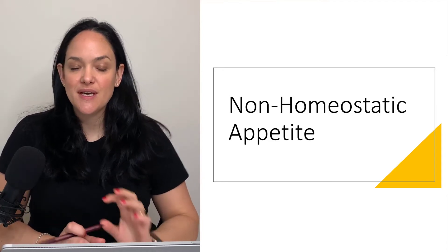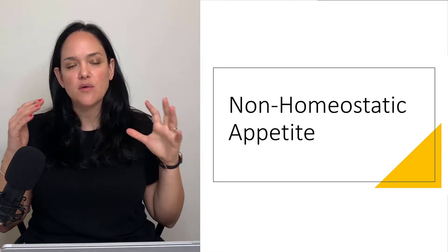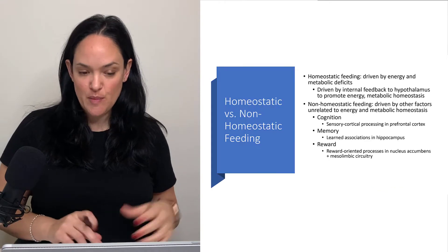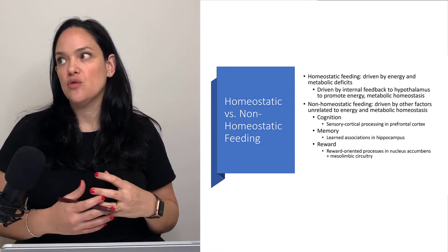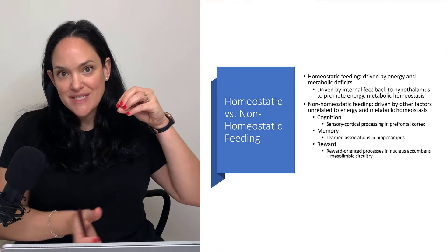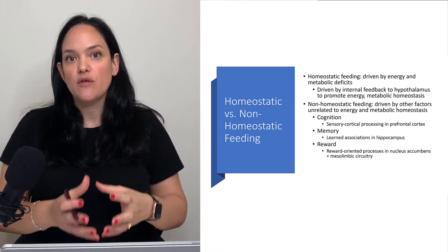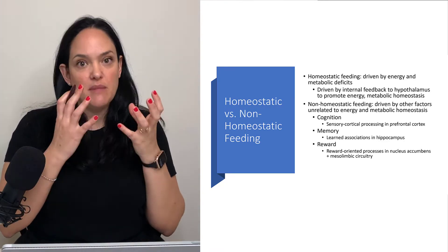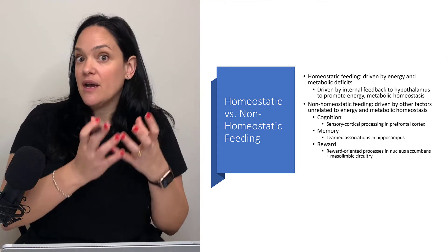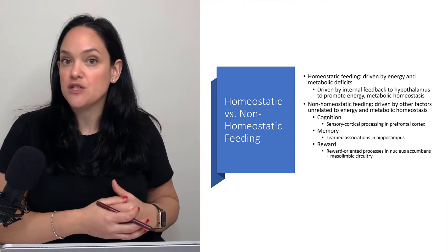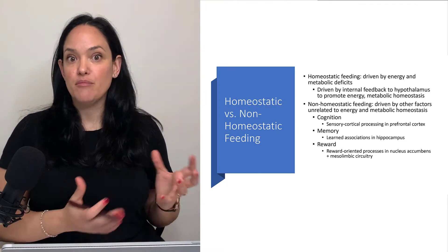In this module, we are going to be looking at non-homeostatic appetite, which I often just will call hedonic appetite, although non-homeostatic is a bit of a better umbrella term. So far, we have learned about homeostatic regulation of feeding — sensing internal signals, figuring out what's going on in adipose tissue via leptin, in the digestive tract via GLP-1, ghrelin, and cholecystokinin, and the microbiota communicating with the appetite regulation center and the hypothalamus. That's all meant to promote energy balance.